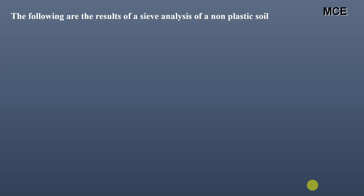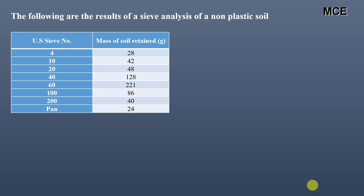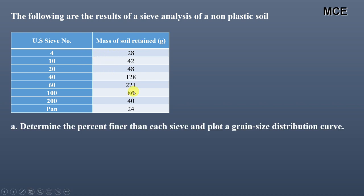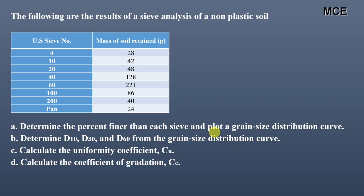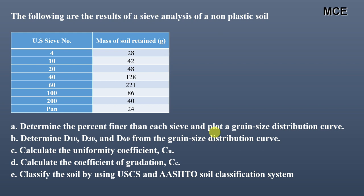I have been given the results of sieve analysis of a non-plastic soil. The table shows the US sieve number in the first column and the mass of soil retained on each sieve in the second column. I have to find the percent finer than each sieve and then plot a grain size distribution curve, determine D10, D30, and D60 from the curve, calculate the uniformity coefficient and coefficient of gradation, and finally classify the soil using USCS and AASHTO systems.